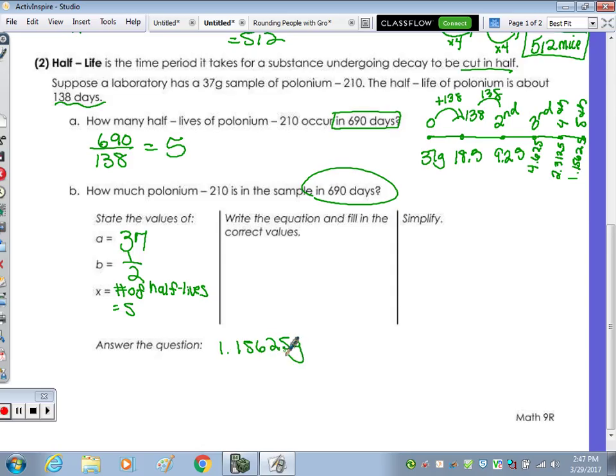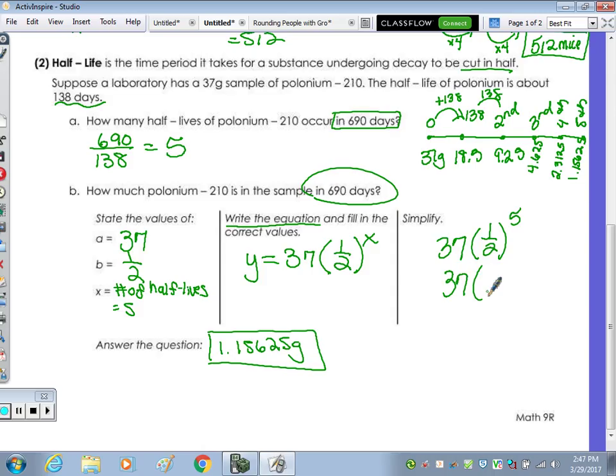To show how that relates to the function, we have our starting amount, A. So if you had to write the equation, Y equals 37 times our B value, 1/2, to the X. You have to have a Y and an X in it. And then when you actually do the math, what are you plugging in for X? 5. So it's 37 times 1/2 to the fifth. 1/2 to the fifth is 1 over 32. And then 37 times 1/32 is 1.15625.